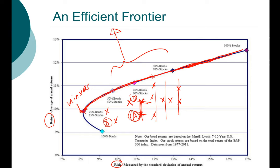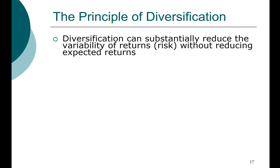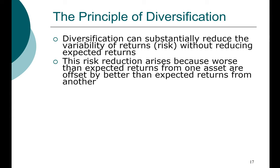The efficient frontier starts with the minimum variance portfolio and goes all the way up. This is the most important basic principle of diversification: diversification can reduce risk without reducing expected return. Because we have many different possible portfolios, we can choose the one that gives the highest return at a given level of risk. Without combining stocks into portfolios, we are stuck with a single stock whose risk and return characteristics cannot be changed. But by combining stocks, we can choose the weight distribution to achieve the risk-return characteristics we want.